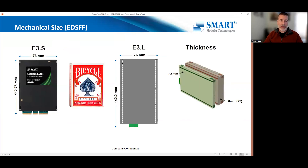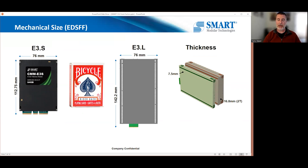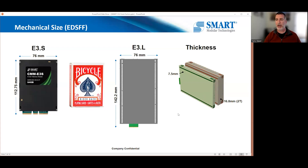The E3 devices are much closer to each other in size, and this actually looks like a great option for CXL. We're going to see some real devices presented in this form factor. There are some disadvantages too, but the main point is there are two versions — short and long — which are relatively close in dimensions. There are also two thicknesses, and they offer more than just physical differences: there are power considerations that go along with each.